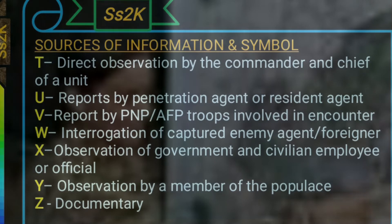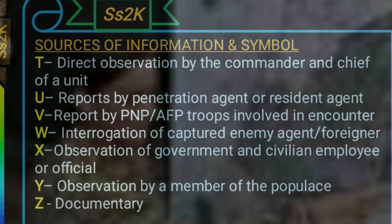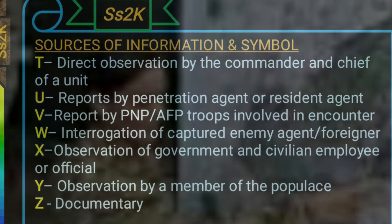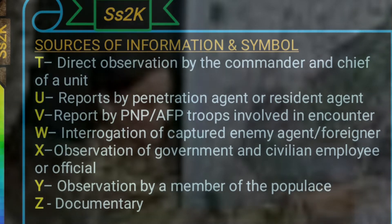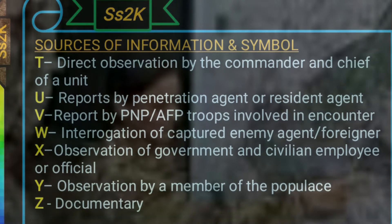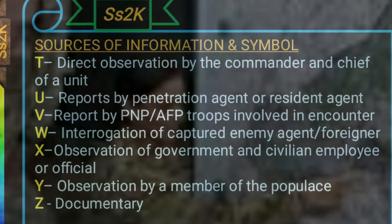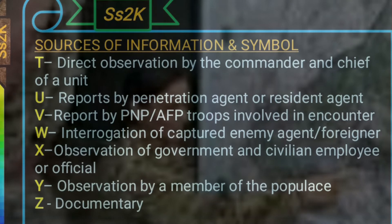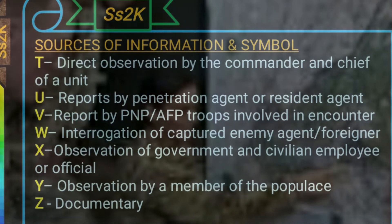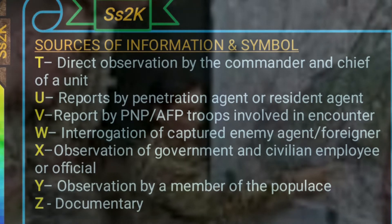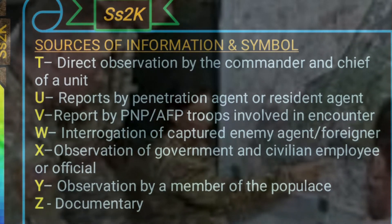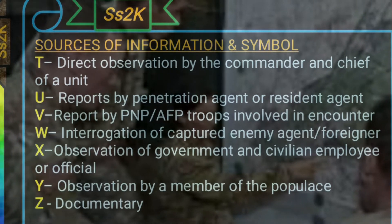The other source symbols are: V — report by PNP or AFP troops involved in an encounter; W — interrogation of a captured enemy or prisoner of war or foreigner; X — observation by a government or civilian employee or official; Y — observation by a member of the populace; and A — documentary.